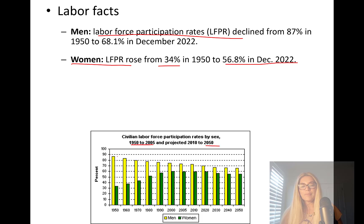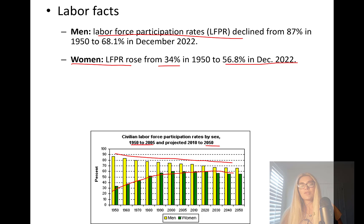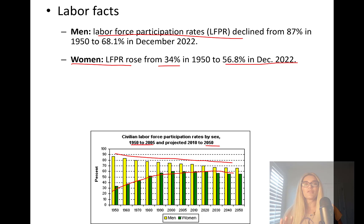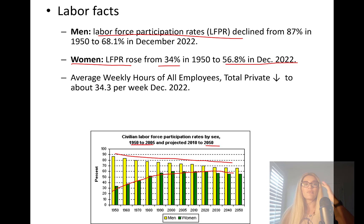If you look at this chart, the bright yellow line is the men's civilian labor force participation rate, and the dark green is the women's labor force participation rate. As you can see, we are seeing a downward trend for men and an upward trend for women, with women's labor force participation getting closer to that of men.